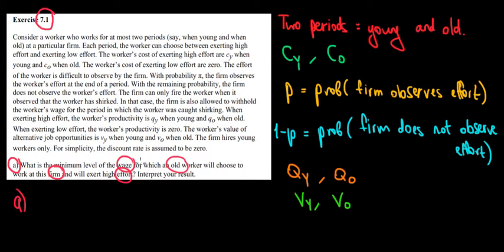So the wage that we're going to pay to an old worker must be greater than the alternative wage. And the alternative wage is going to be VO. This is the alternative utility that he would get. Actually this is the actual alternative wage that you would get in a different company.